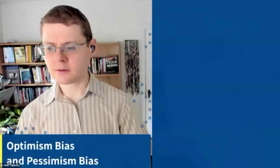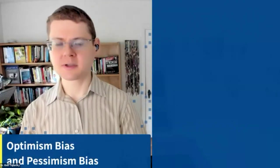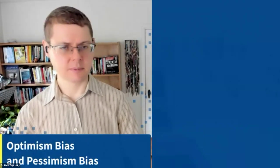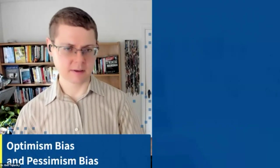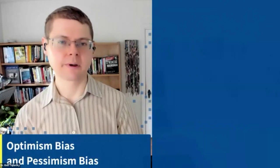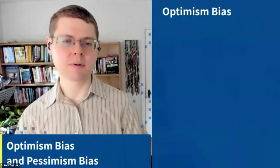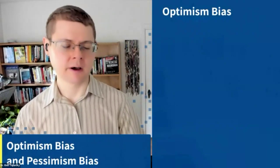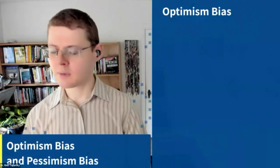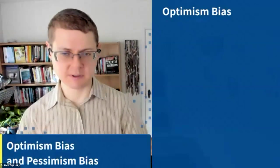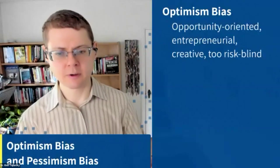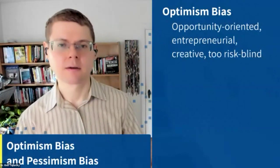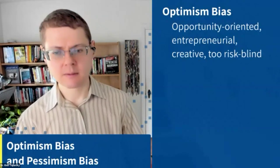Let's talk about another tendency that causes us to make bad decisions around other people: the optimism bias and the pessimism bias. These are kind of like they sound. Optimism bias has to do with people who see the glass as half full — they see the grass as green on the other side of the hill. These are people who tend to be opportunity-oriented, entrepreneurial, creative, but too risk-blind. I've seen many dentists who start their own practices rather than working in someone else's practice, being more optimistic.